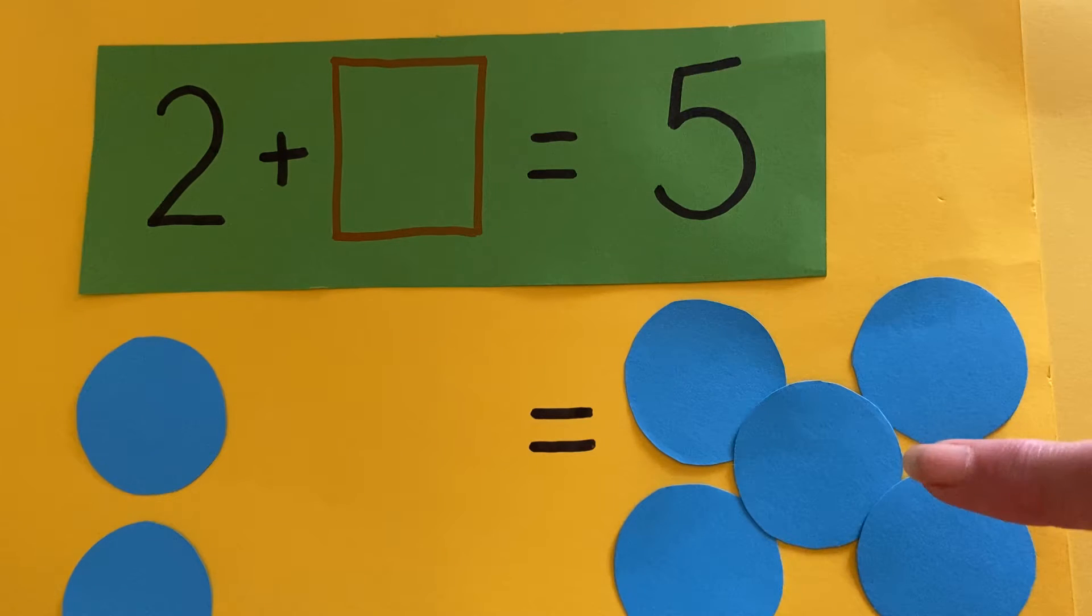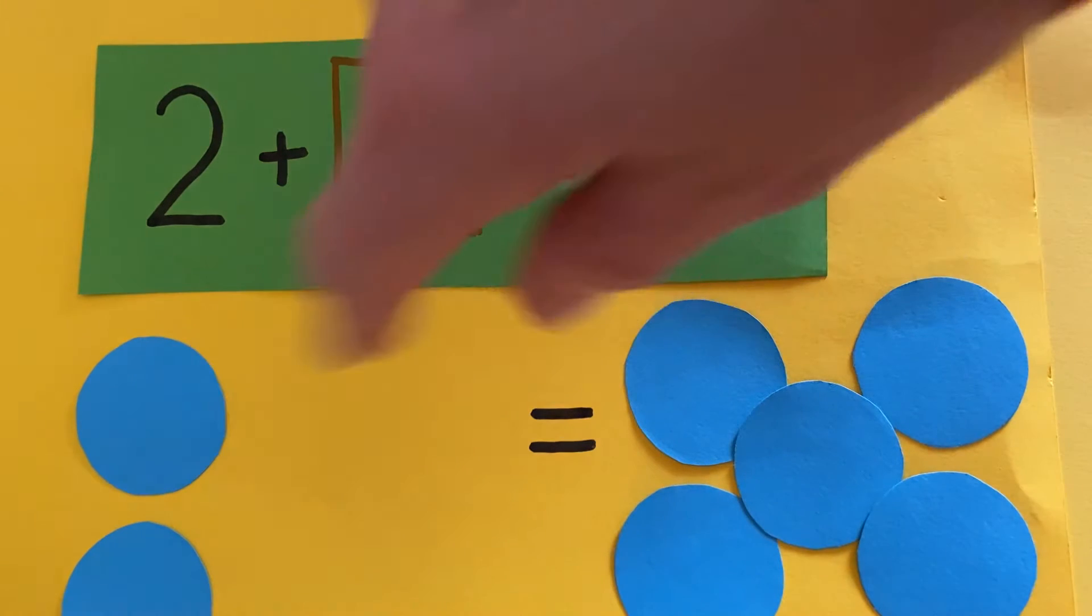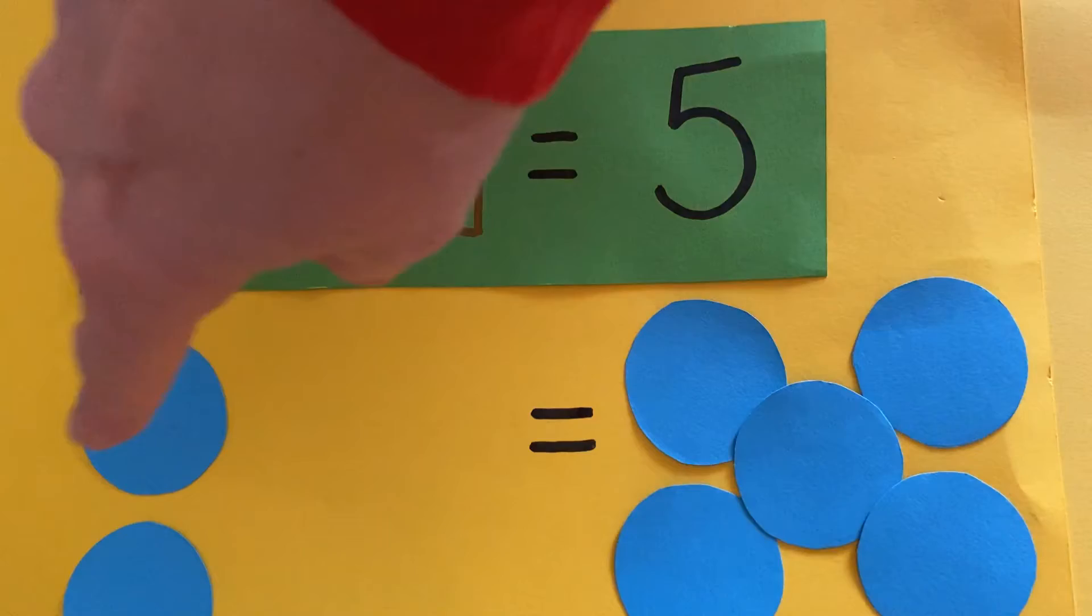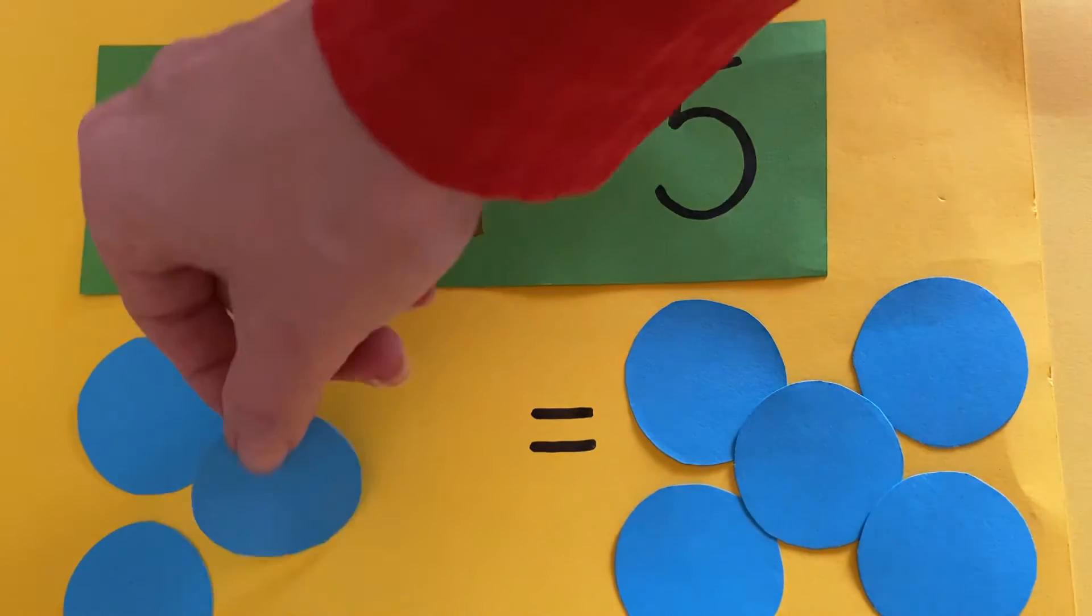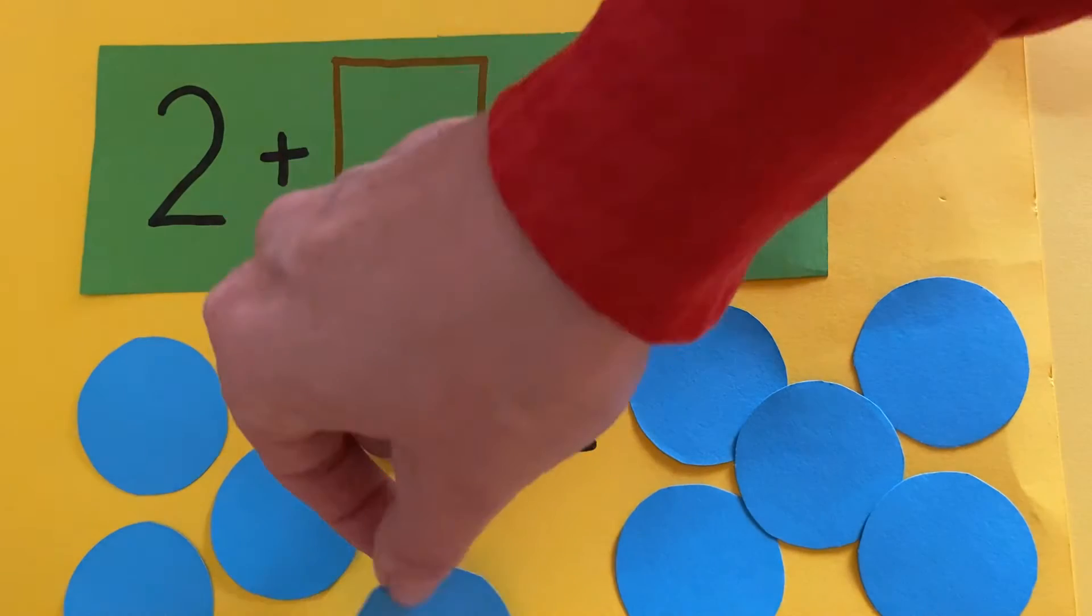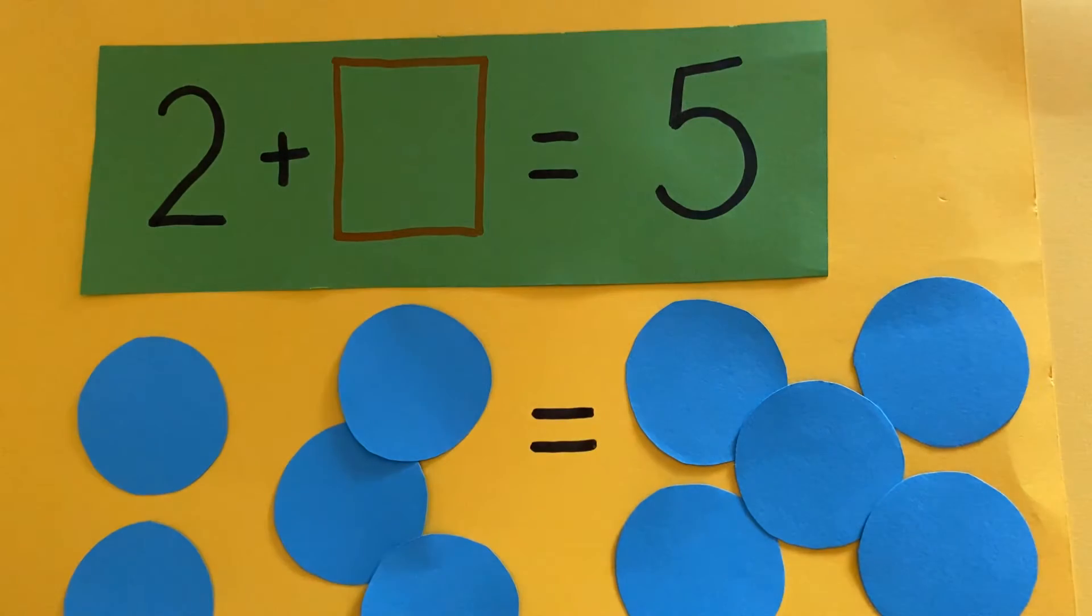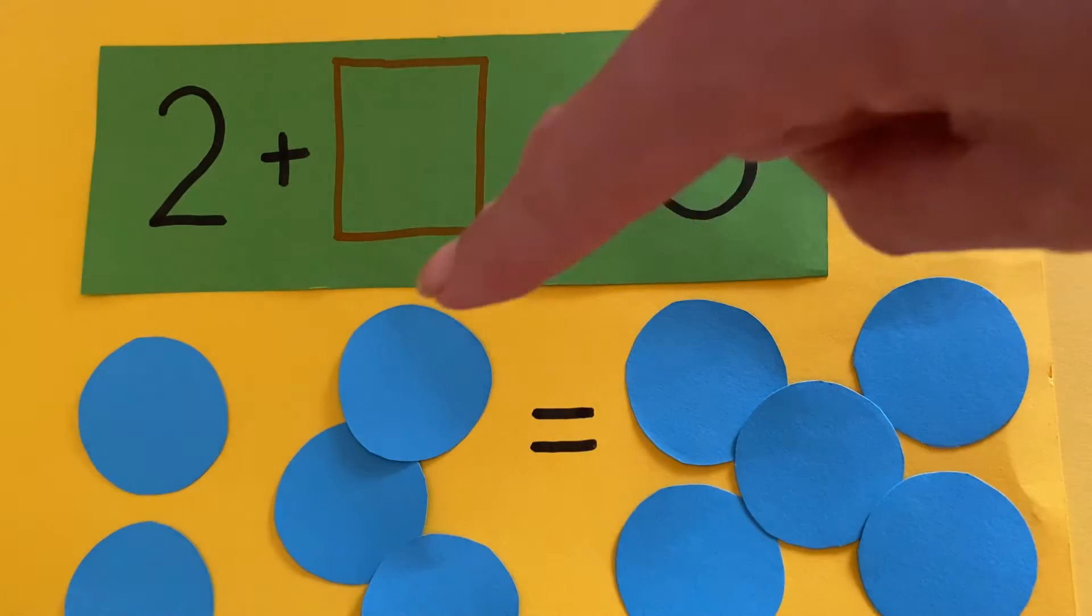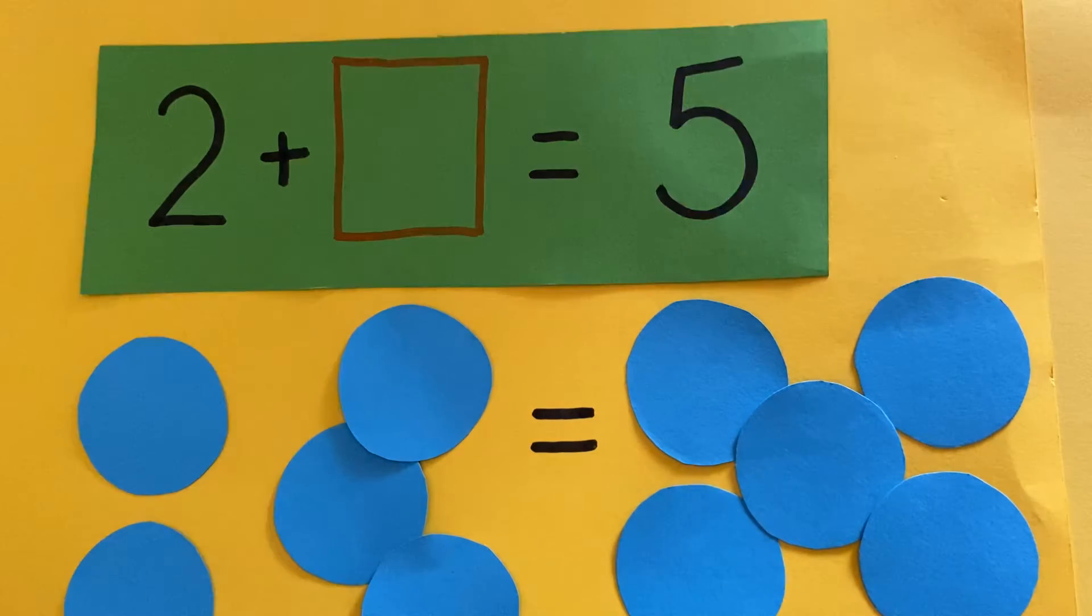Well, I've got five this side and just two. I need some more. One, two, three, four, five. How many counters did I add to this side?